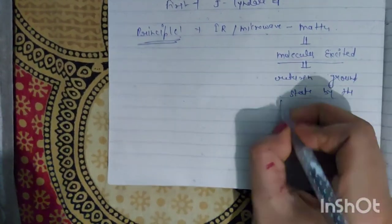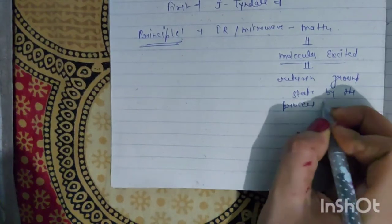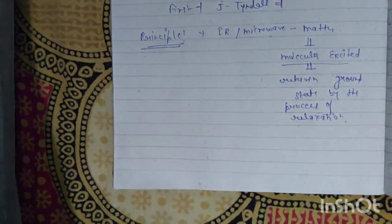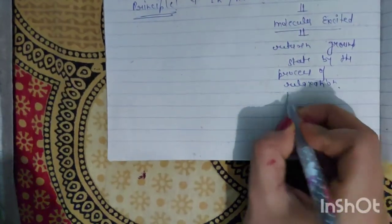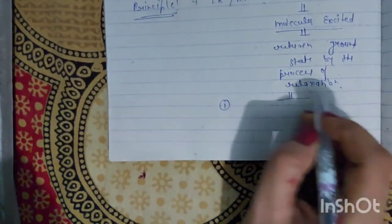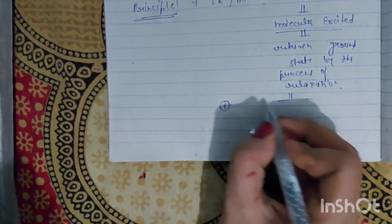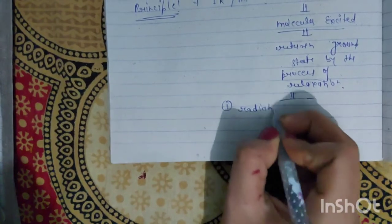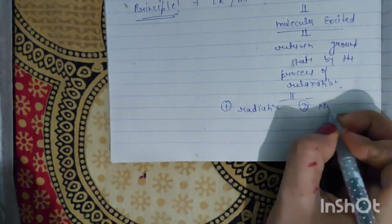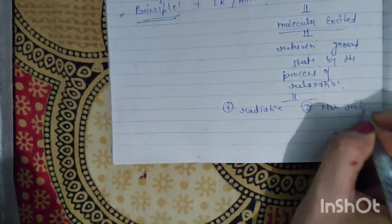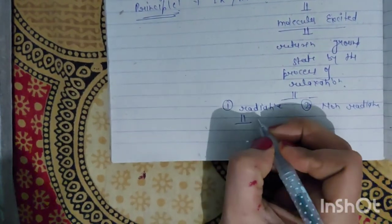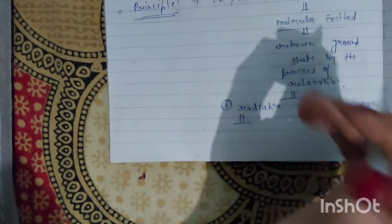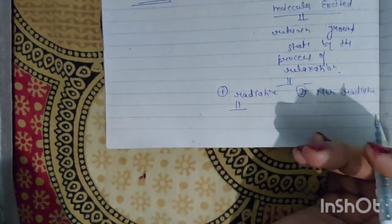In the ground state there are three types of relaxation. These three types we can divide into two types: radiative and non-radiative. If we use radiative process, this means that our molecule is excited then loses energy.